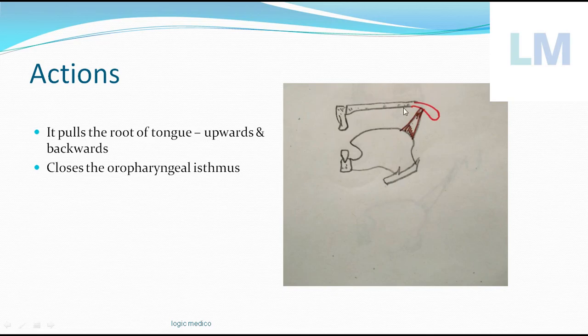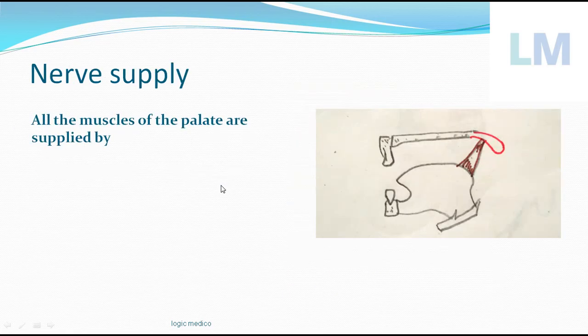For exam purposes, you can write that the action is pulling the tongue upwards and backwards. But what it is actually doing is preventing food from coming back into the oral cavity by closing the oropharyngeal isthmus. That is the main function of palatoglossus.